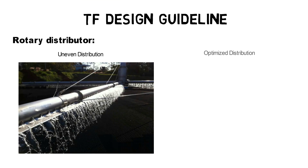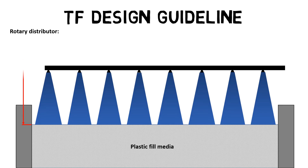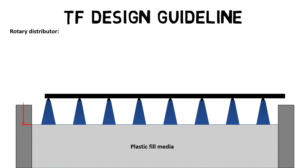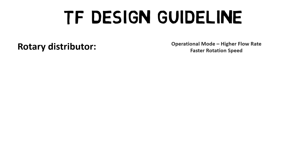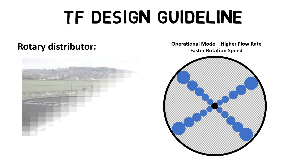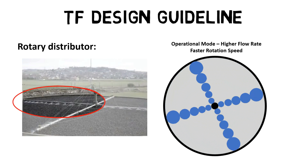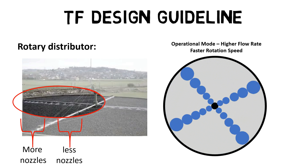The purpose of a rotary distributor is, of course, good water distribution, and it is also used for plastic-fill media flushing. For an even spray pattern, a certain distance between the top of the plastic-fill media and the rotary arms must be determined. As the spray area enlarges with increasing distance from the central shaft, more spray nozzles have to be placed at the end of the rotary arms compared to the beginning.